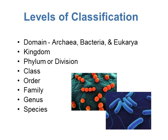This is showing our different levels of classification. At the top we have a domain, which is the largest level. We have three domains: the archaea domain, bacteria domain, and eukarya domain. Within these domains we have kingdoms, and then phylums or divisions. Those phylums are divided into classes, classes into orders, orders into family, family into genus, and genus into species.